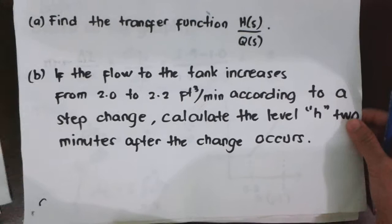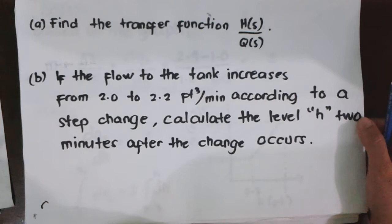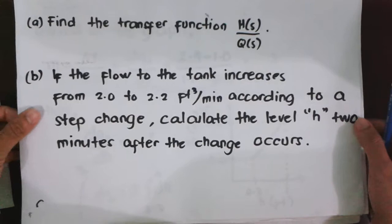And now we are tasked to find the transfer function of the process. And also, we are given the condition that if the flow to the tank increases from 2.0 to 2.2 cubic feet per minute according to a step change, we calculate the level H 2 minutes after the change occurs.